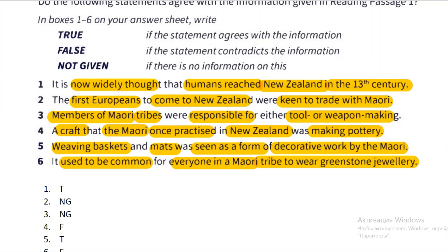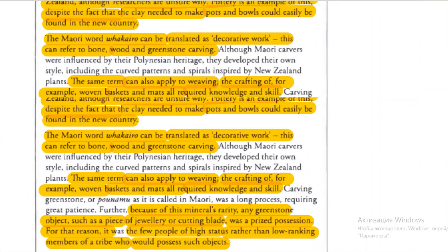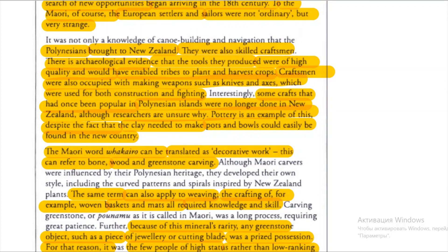When does the passage talk about pottery, and what does this refer to? You need to go to the middle of the second paragraph and the last sentence. This is FALSE. The second paragraph explains that some crafts were no longer done in New Zealand — pottery is an example of this, despite the fact that clay could easily be found in the new country. Although the Maori had the opportunity to do pottery in New Zealand, they did not pursue it. This is FALSE because it is contradicting information.